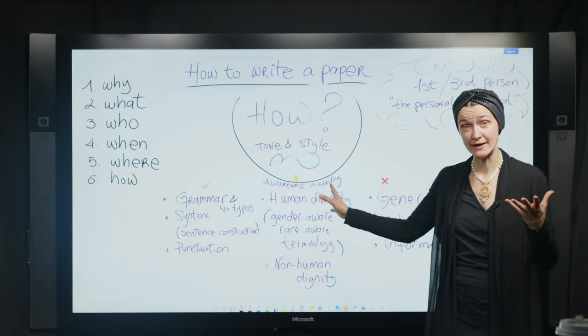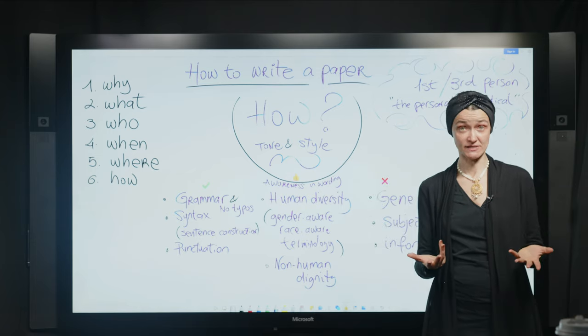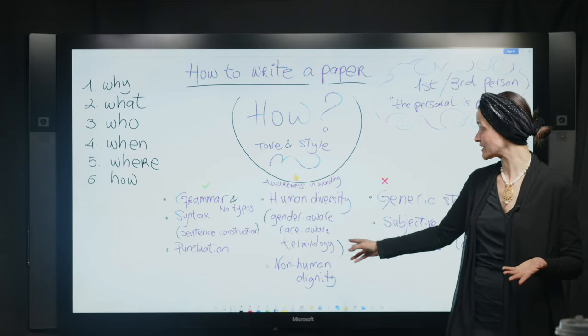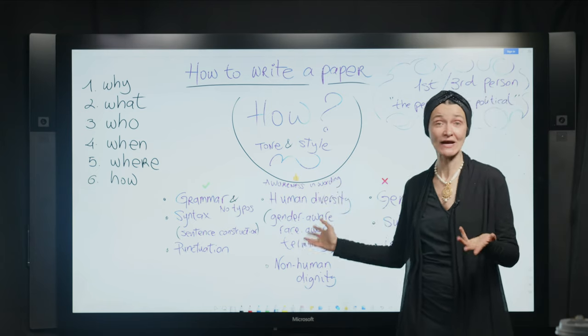So this is going the extra mile. Try to be aware in the way you write. For instance, try to make sure that you really dignify human diversity. Try to use a terminology, for instance, that is gender aware, race aware. What does it mean?